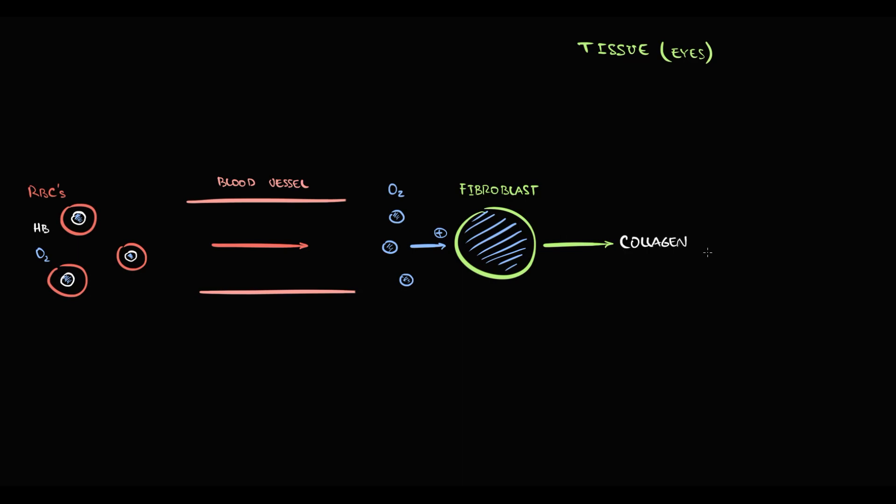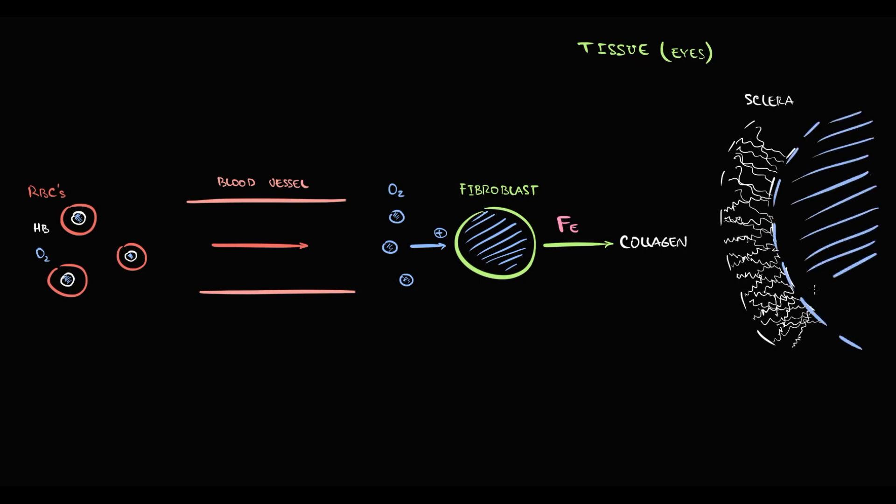To produce collagen, fibroblasts need a lot of iron because iron is a cofactor for collagen production. And deposition of collagen molecules form the structure that we call sclera. Behind sclera we have a choroid layer of uvea. Sclera is so thick that we do not see this bluish choroid layer behind it. And this makes sclera totally white. So in normal condition we do not see uvea.